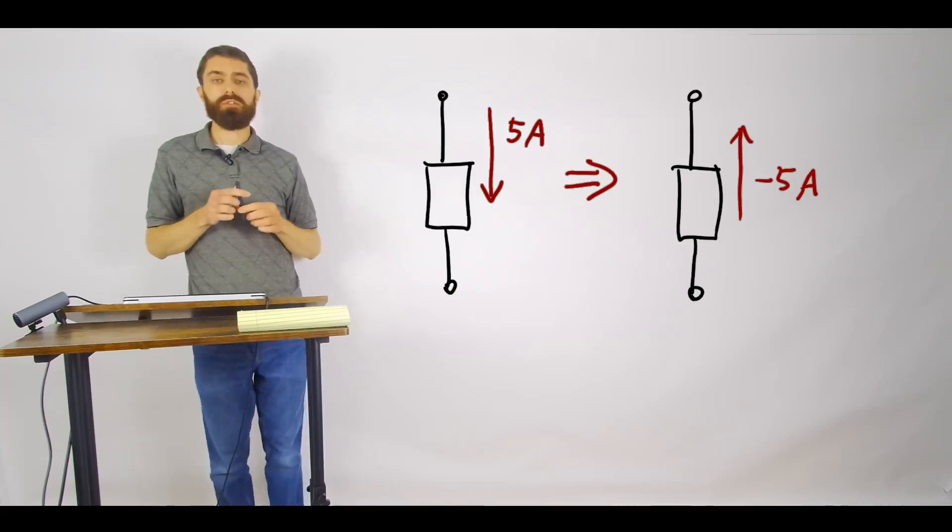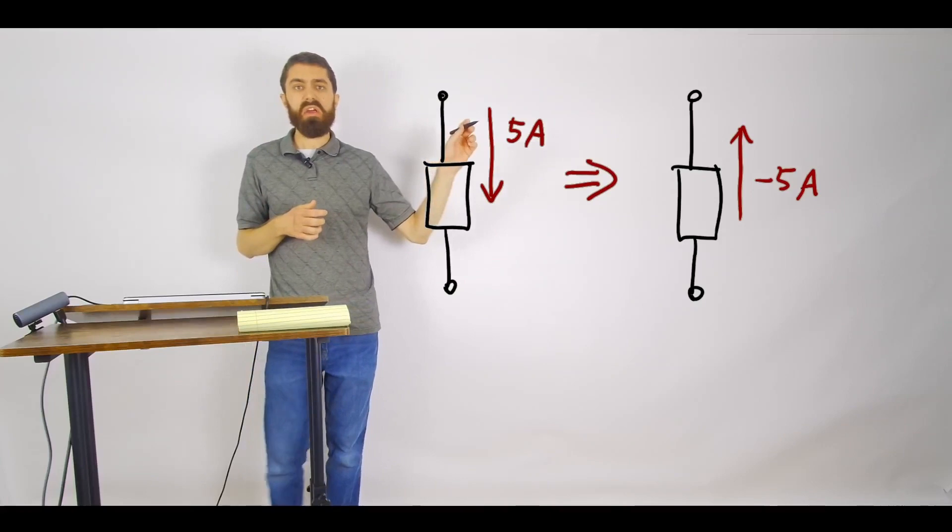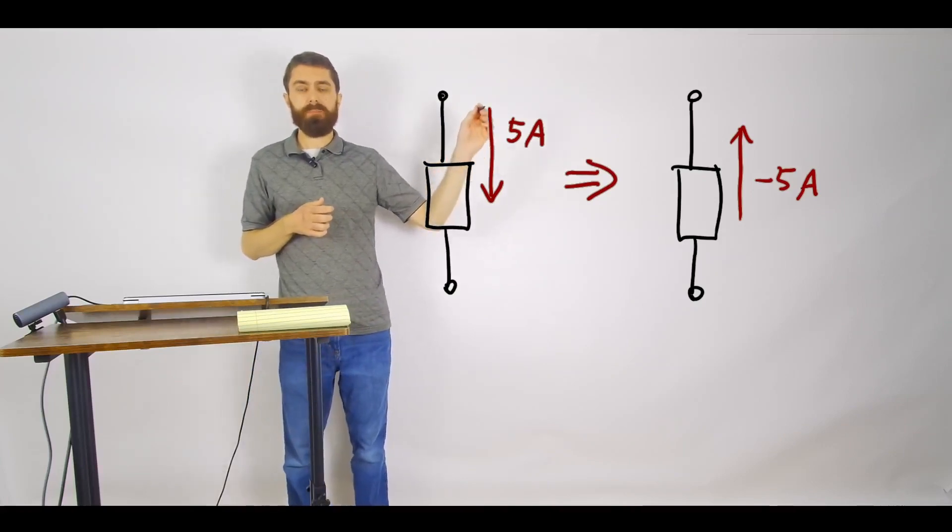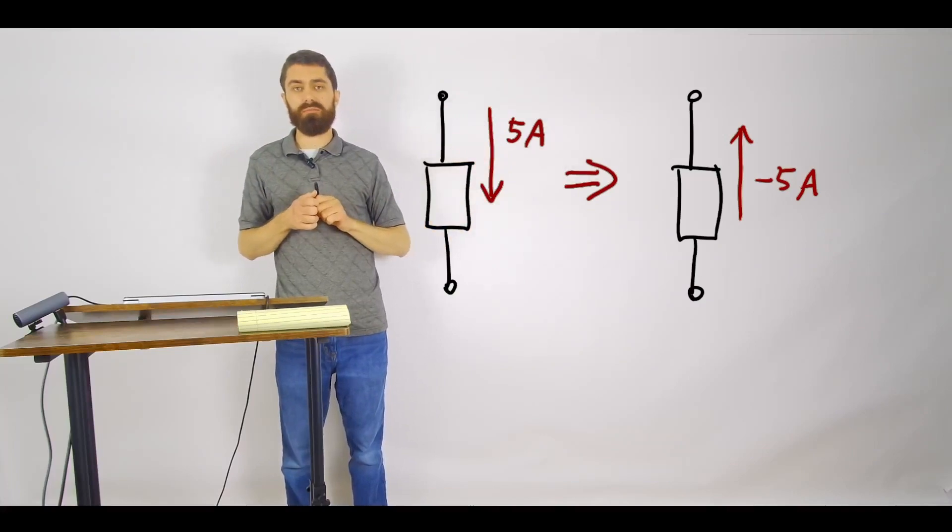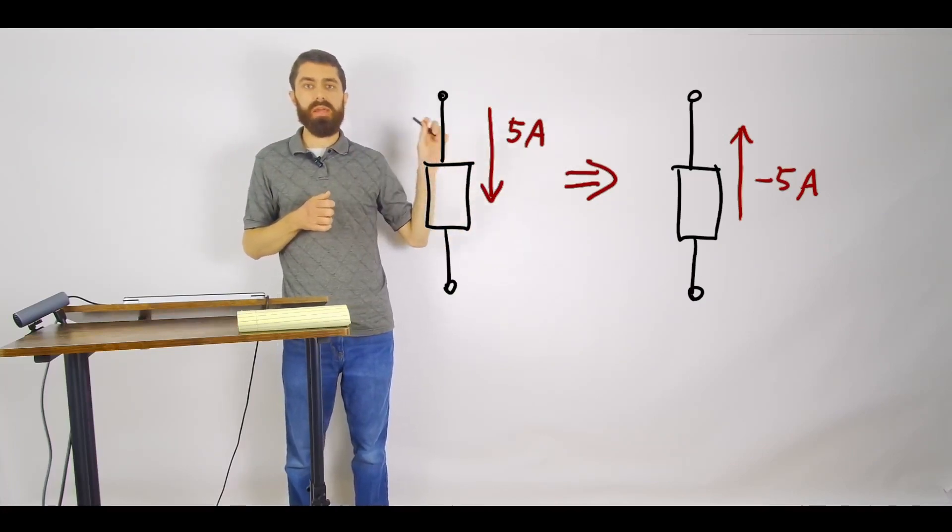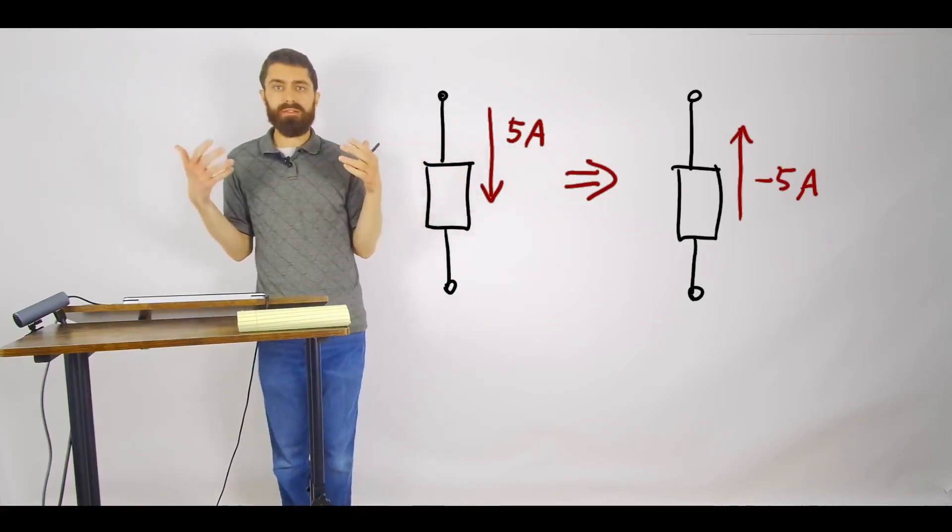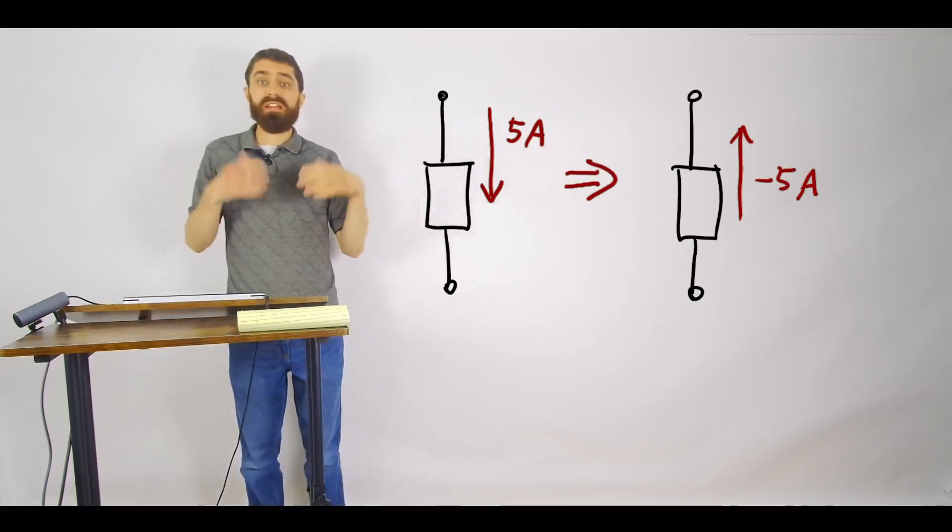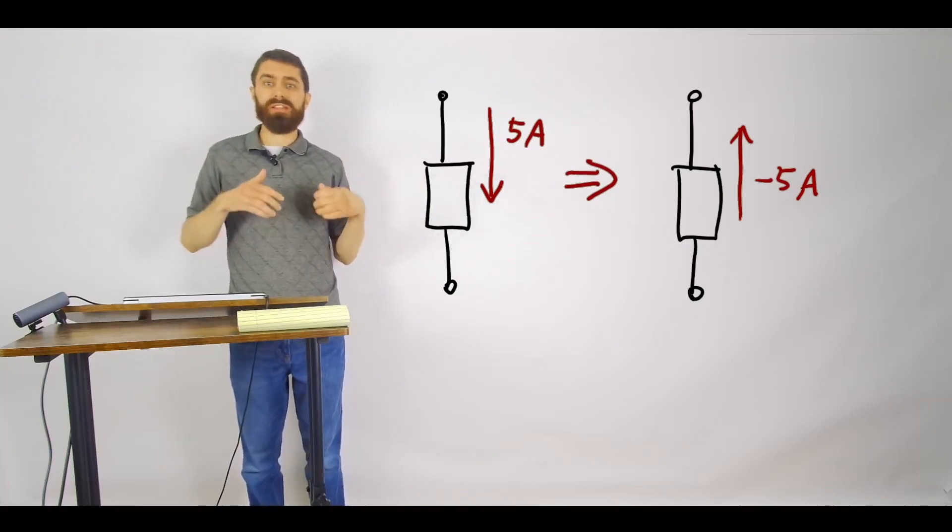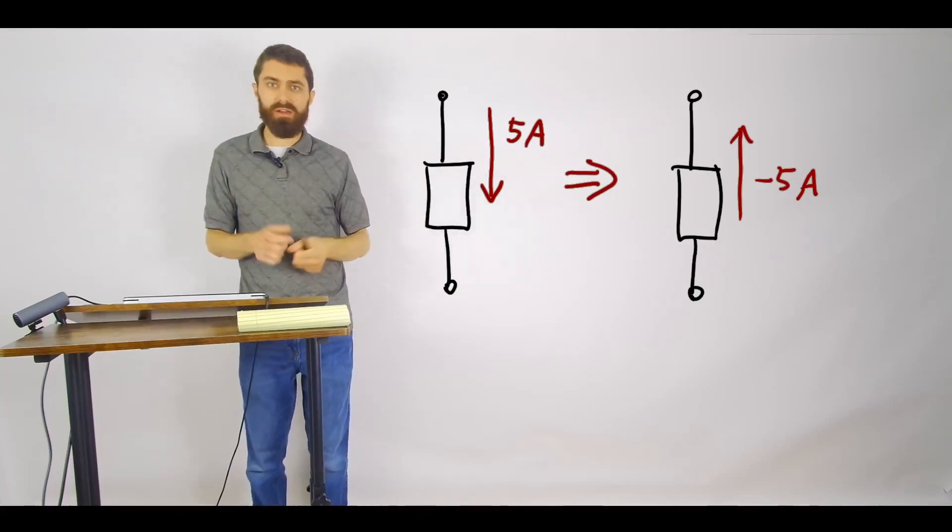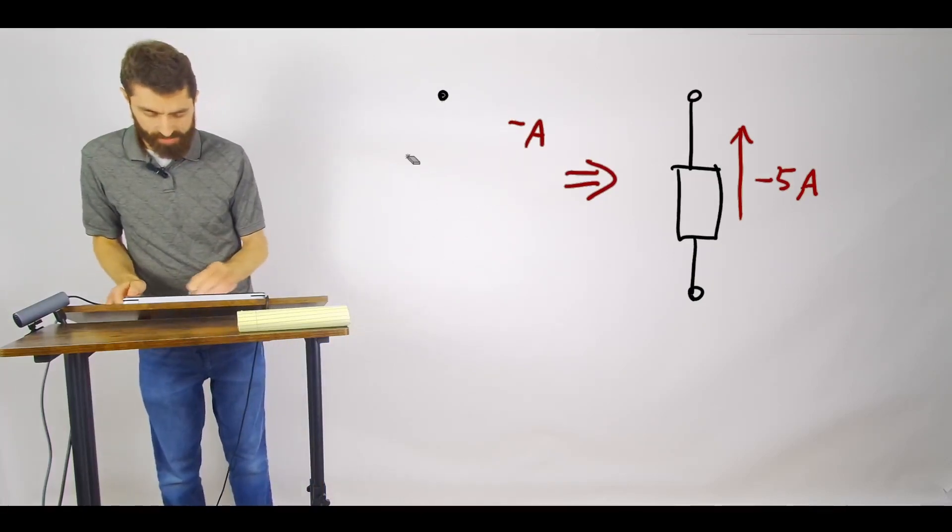Oftentimes what you'll do is you'll go ahead and when you're writing out a circuit, you'll just say oh you know what I'm just going to guess that the current is in this direction or in a certain direction. And then when you solve for that current variable and it comes out negative, then it means that you basically guessed wrong and then it's actually flowing the other direction. So let me give you an example here.